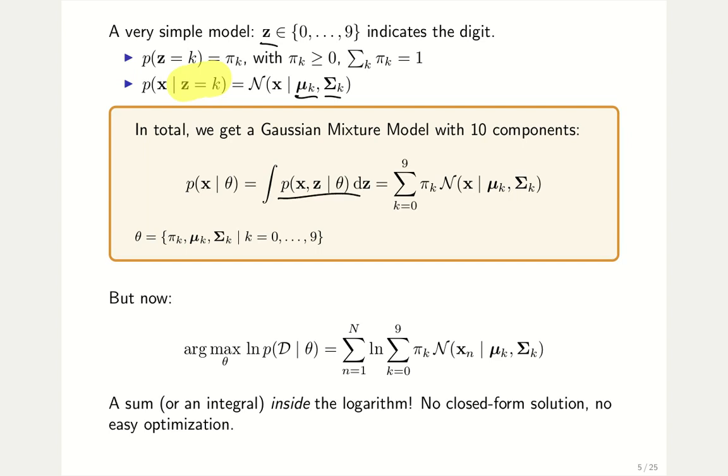Because we need the joint distribution in order to marginalize it out, this latent variable, we also need a prior on the distribution. That's a discrete random variable because we have 10 discrete states. That means we just have a vector of probabilities pi k. These pi k's need to sum up to 1, and they also need to be non-negative because they are direct probabilities.